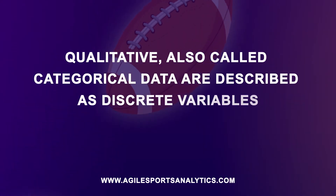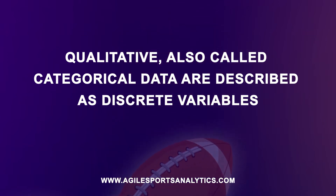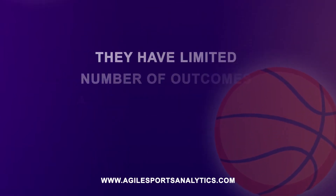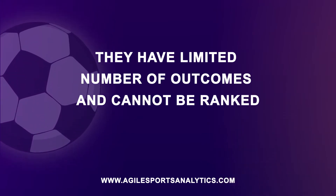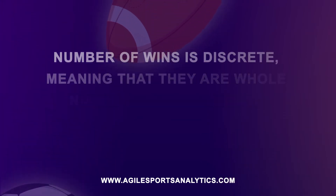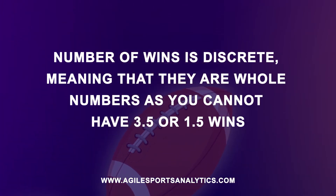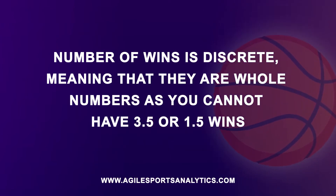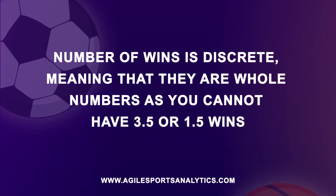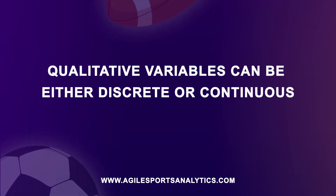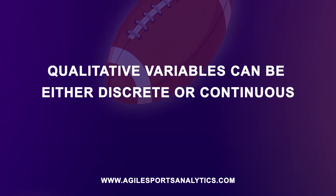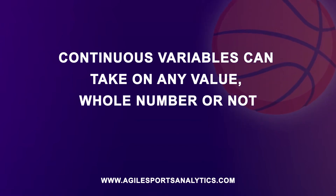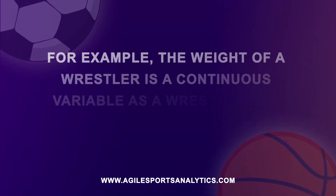Qualitative data, also called categorical data, are described as discrete variables. They have a limited number of outcomes and cannot be ranked. Number of wins is discrete, meaning that they are whole numbers — you cannot have 3.5 or 1.5 wins. Qualitative variables can either be discrete or continuous. Continuous variables can take on any value, whole number or not.